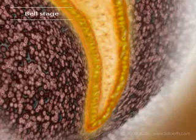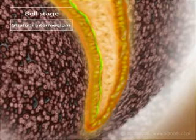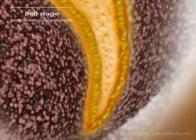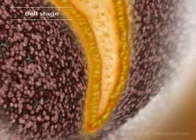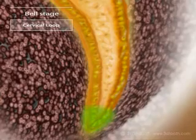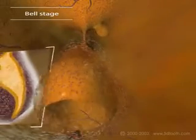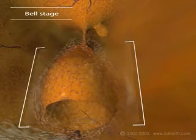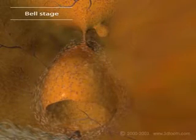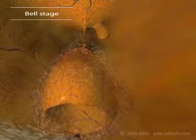Just visible is a flattened area of cells called the stratum intermedium. We can also see the juncture where the inner and outer enamel epithelium meet — this cervical loop is important in tooth formation, as we'll discover soon. By the time the tooth bud pinches off from the dental lamina at the end of the bell stage, the inner enamel epithelium has folded to form the shape of the future crown.